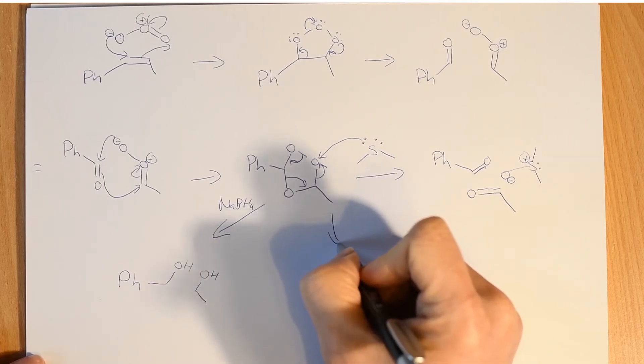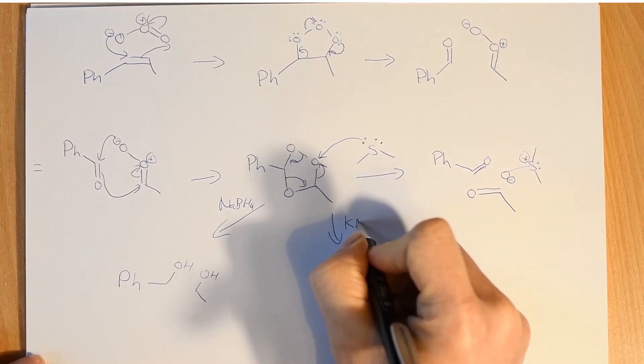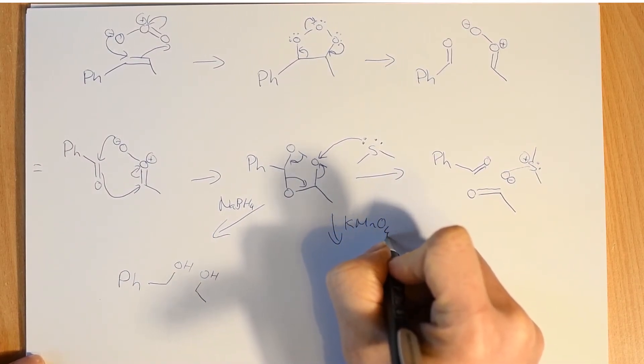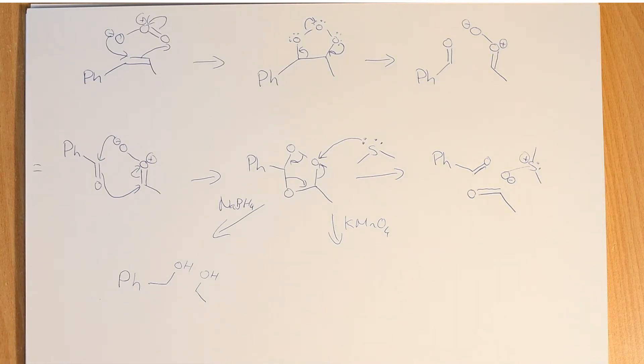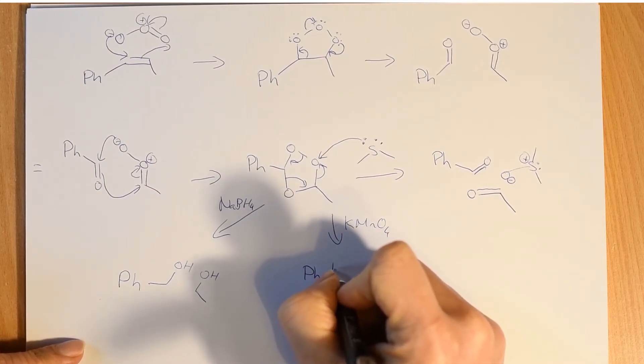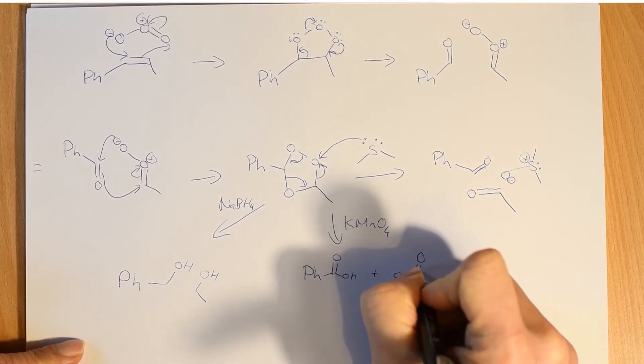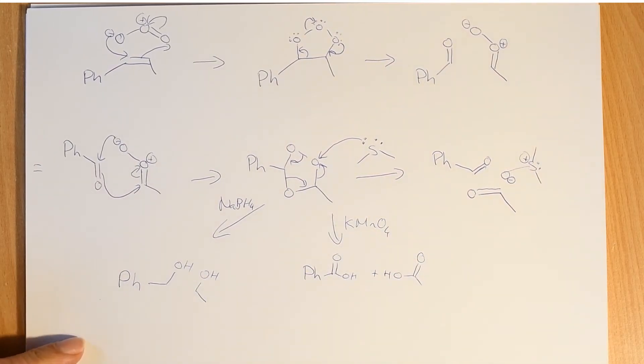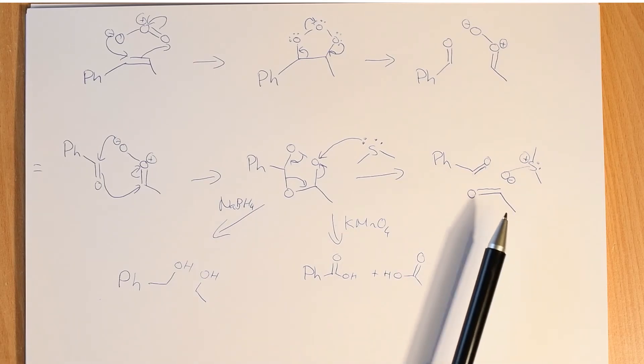And if we treat it with something oxidizing, like potassium permanganate, if we treat it with an oxidizing agent, then we'll end up with the two carboxylic acids. So in this case, we'd end up with benzoic acid and ethanoic acid. So it's a very useful reaction for taking a carbon-carbon double bond and using that to produce an aldehyde.